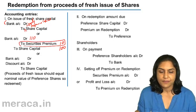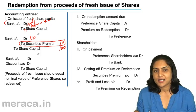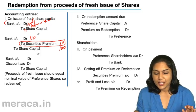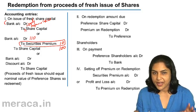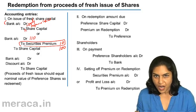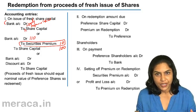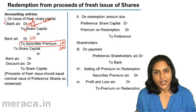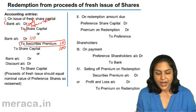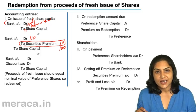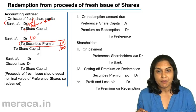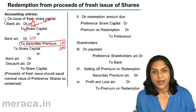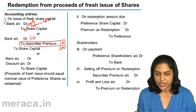Securities premium is a capital reserve and can be used only for four specific purposes: for the issue of fully paid bonus shares, for writing off preliminary expenses, to write off the discount, loss, or any other expense on issue of shares or debentures, and for writing off the premium on redemption of preference shares or debentures.